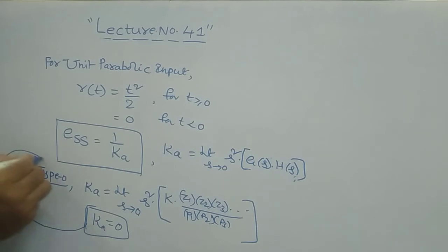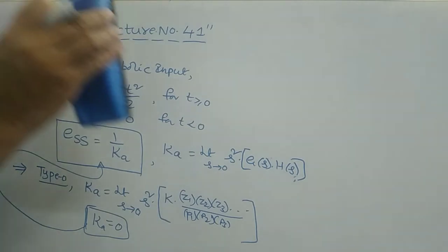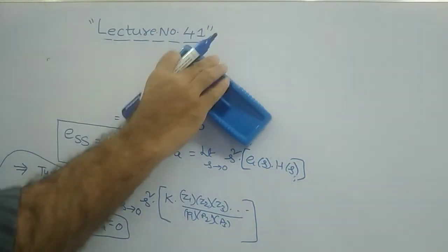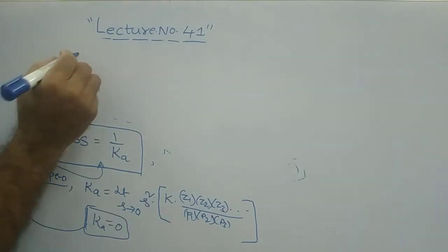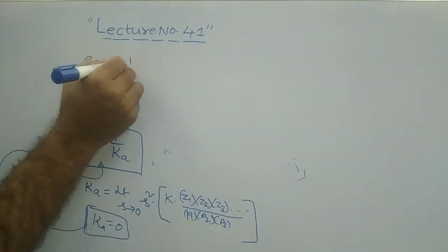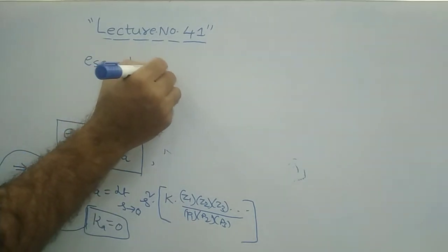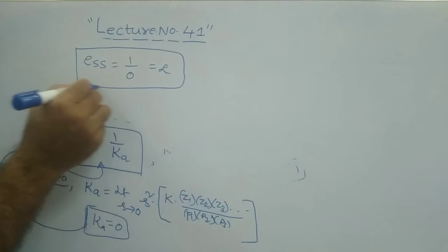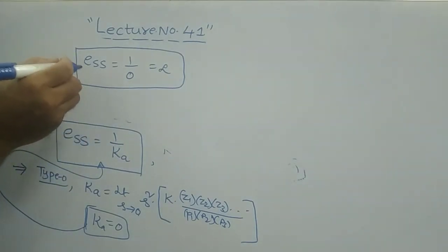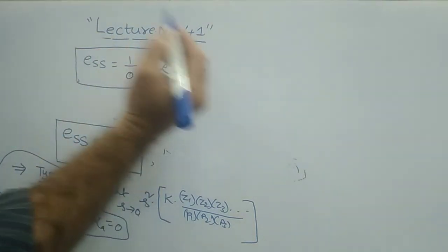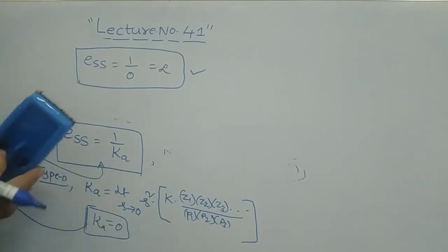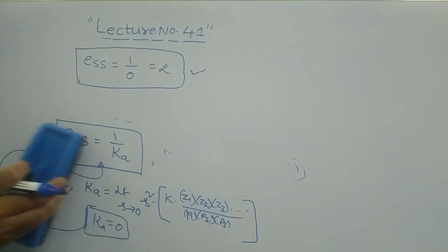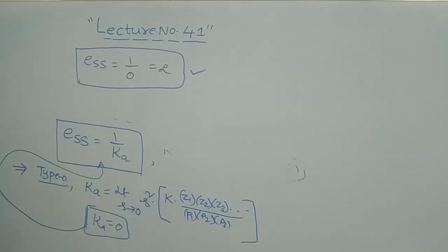Substituting Ka equals 0 into the ESS formula: ESS equals 1/0 which is infinite. Therefore, for a type 0 system with unit parabolic input, the steady state error is infinite. These values are very important and can be expected in GATE as well as UPSC examinations in objective-type questions.